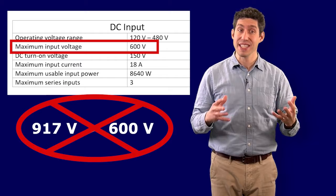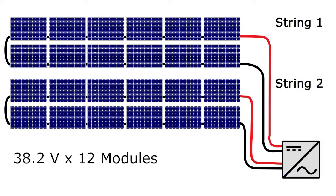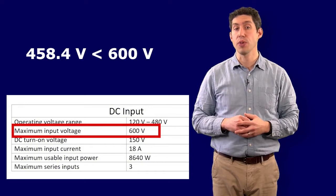To solve this problem, we'll instead try a parallel string to provide two series strings. If we have two series strings, then there are only 12 modules per string, and 12 modules times the 38.2 VOC is 458.4 volts. This is acceptable because it's below the 600 volt maximum.